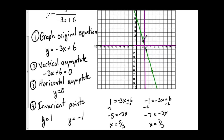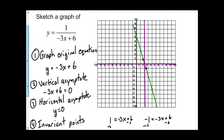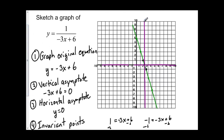I can draw these invariant points on the graph by looking at where y equals 1 and where y equals negative 1. To finish my graph, I start at the asymptote, go along up to the invariant point, through the invariant point, and over to the other asymptote. It's never going to cross the asymptote — it gets as close as it can but never actually crosses. That's what the graph of 1 over negative 3x plus 6 looks like.